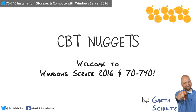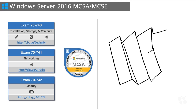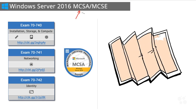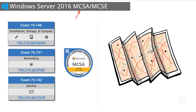From there we'll drill down into the 70-740 exam so you can get a good idea of what to expect from the exam and the technologies we'll be learning about. No adventure is complete without a primary tool — ours is going to be the virtual lab, which will give you the ability to follow along and get hands-on with every single technology in this course. The Server 2016 MCSA consists of three exams: 740, 741, and 742. The natural starting point begins right here with 70-740.